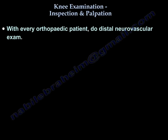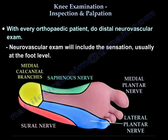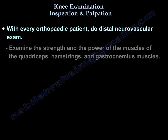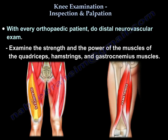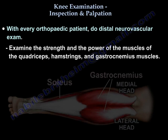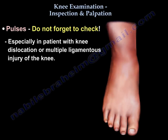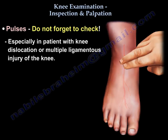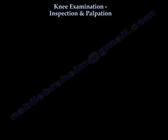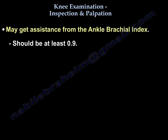As with every orthopedic patient, perform a distal neurovascular exam. The neural exam includes sensation at the foot level and strength assessment of the quadriceps, hamstrings, and gastrocnemius muscles. Don't forget pulses, especially with knee dislocation or multiple ligamentous injury — you may use the ankle-brachial index, which should be at least 0.9.